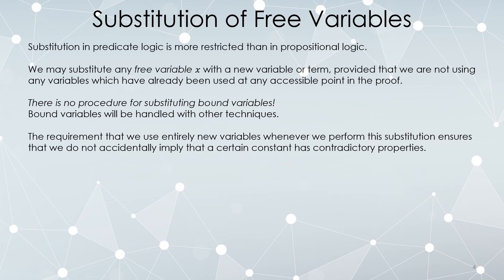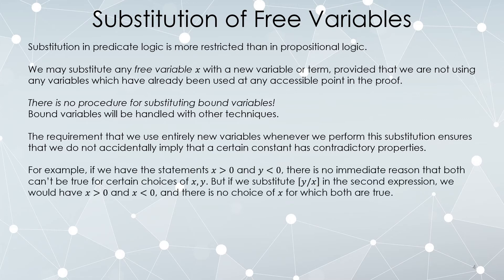The reason for this restriction is to make sure you don't accidentally imply a specific constant has contradictory properties. For example, you could have two different statements: x is bigger than zero, and y is less than zero. There's no immediate reason you can't pick an x and a y that make both of them true. But suppose you substituted x in for y — then you'd have x is bigger than zero and x is less than zero, and that can't both be true. So if you substitute using a variable that already exists, you might get a contradiction. This is why the substitution has to use variables that are totally new and don't exist anywhere else in the proof.